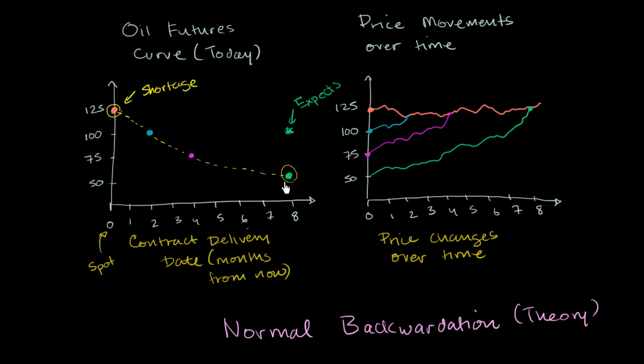And the reason why they might be willing to, maybe they're oil producers and oil is such a volatile price and because they are dependent on oil revenues to support the people who live in that country or whatever else, they're essentially, in order to guarantee the price and not be susceptible to the volatility, they're willing to sell it at a discount to this theoretical expected price.